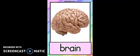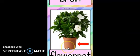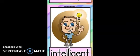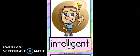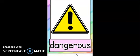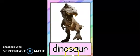Have you opened your book? But before that, let's look at these flashcards. Number 1: brain, brain — otak. Number 2: flowerpot, flowerpot — pasu bunga. Number 3: intelligent, intelligent — intelligent means bijak. Next: dangerous, dangerous — dangerous means bahaya. Dinosaur — dinosaur means dinosaur.